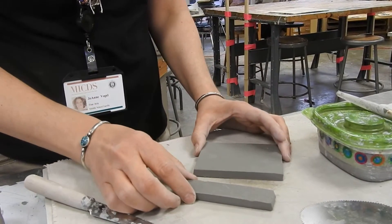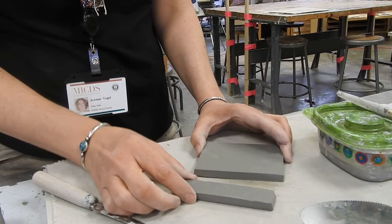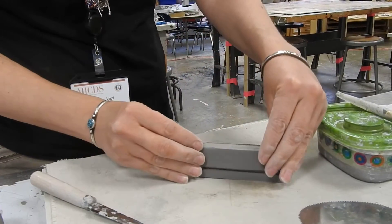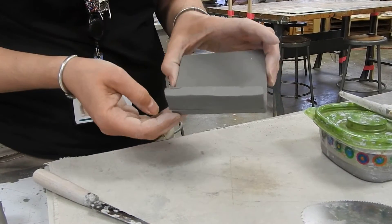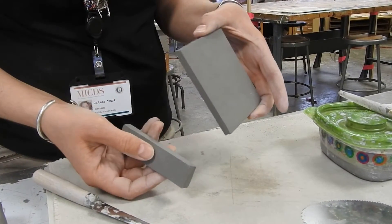Anytime you want to add two pieces of clay, you need to slip and score. If you just take your two pieces and press them together, they're going to stick right now because the clay is wet. But as soon as the clay dries out, they're going to pop apart.